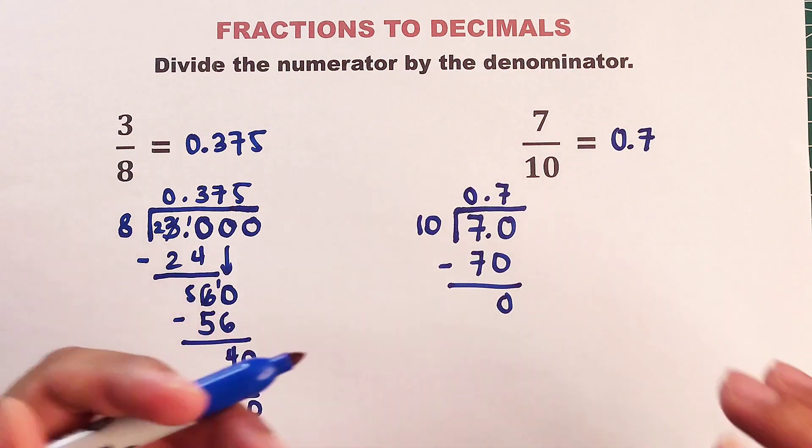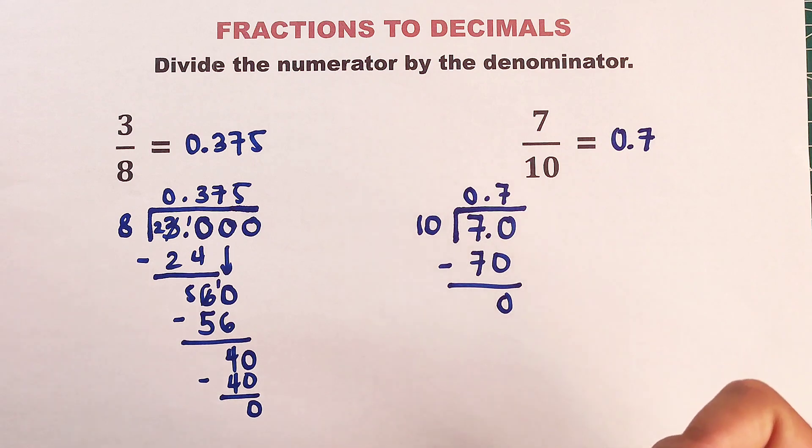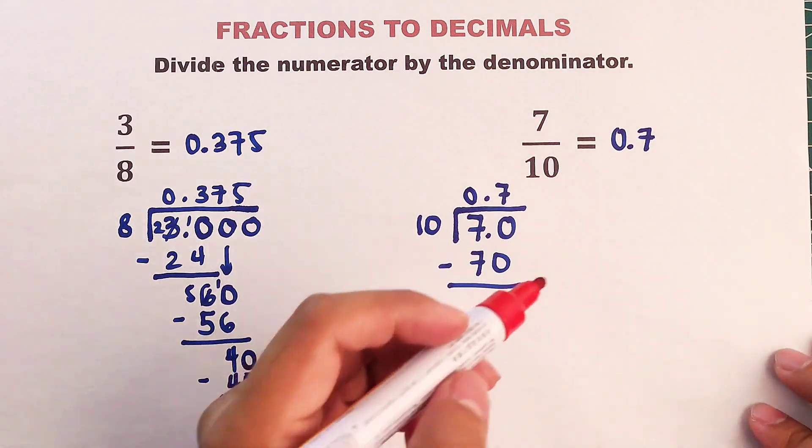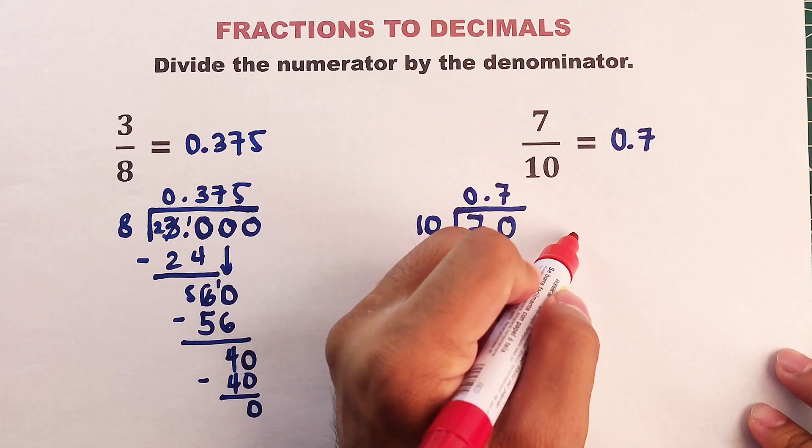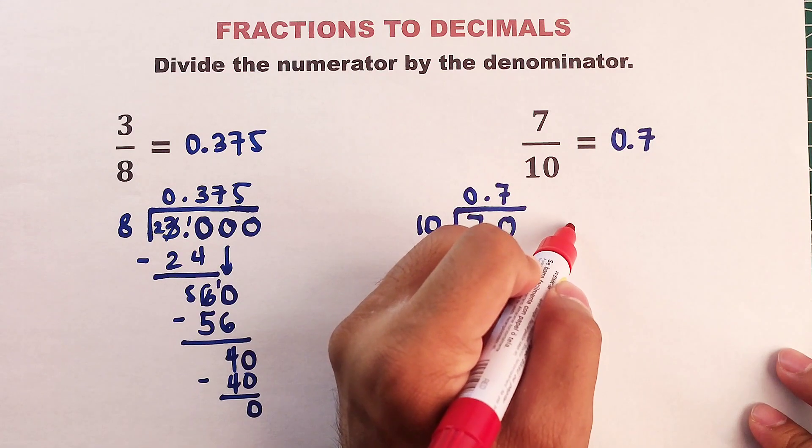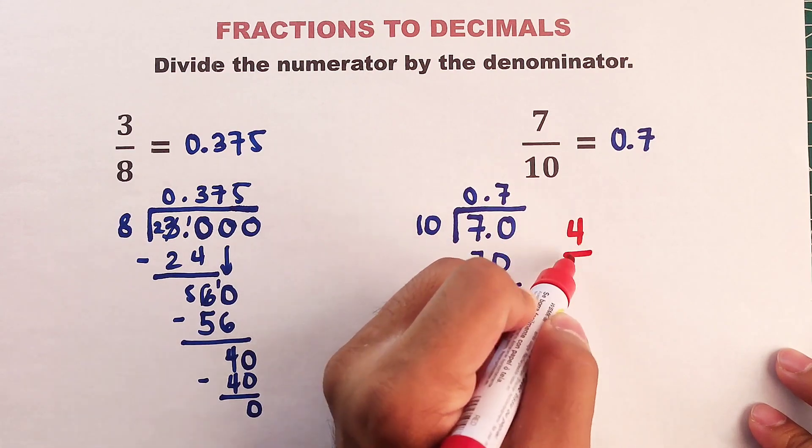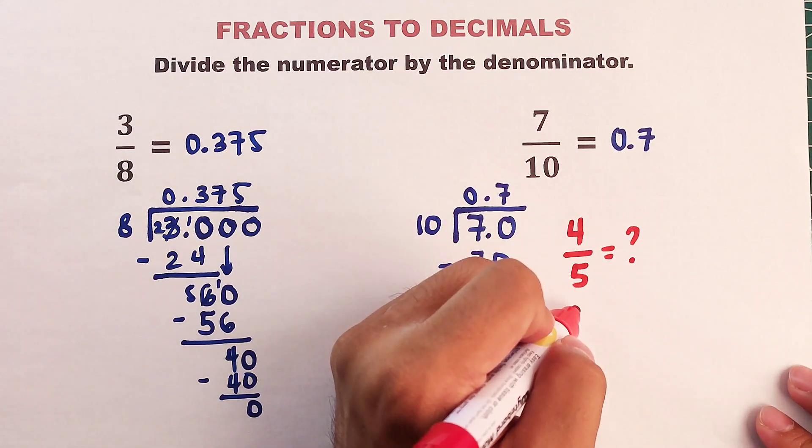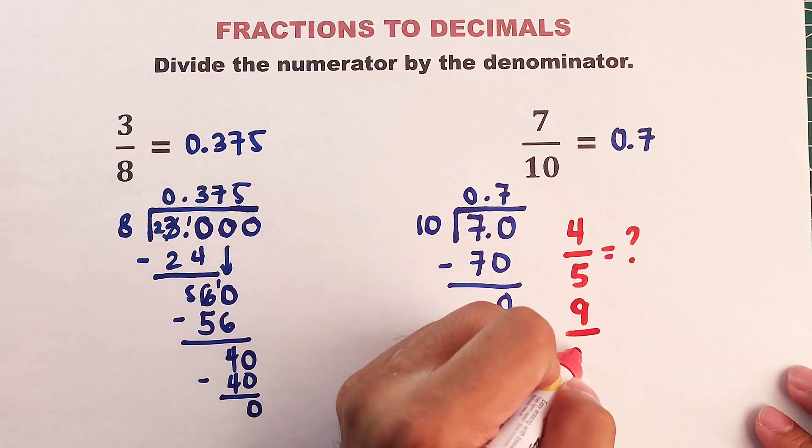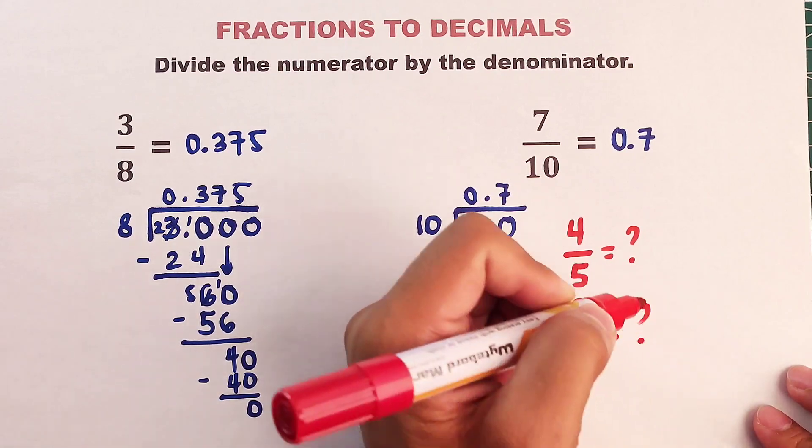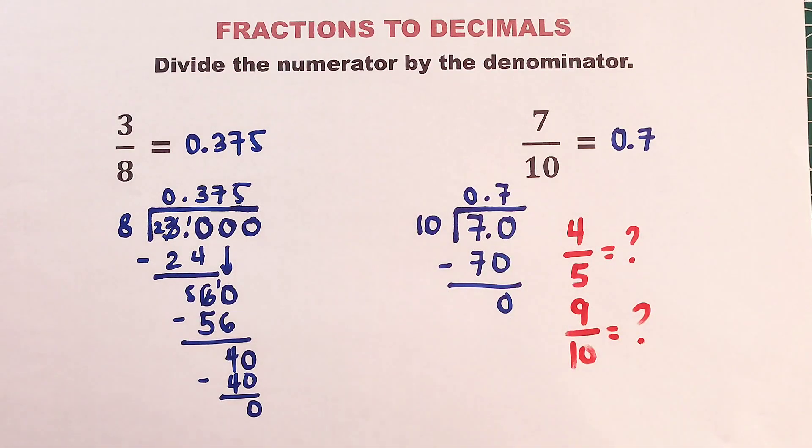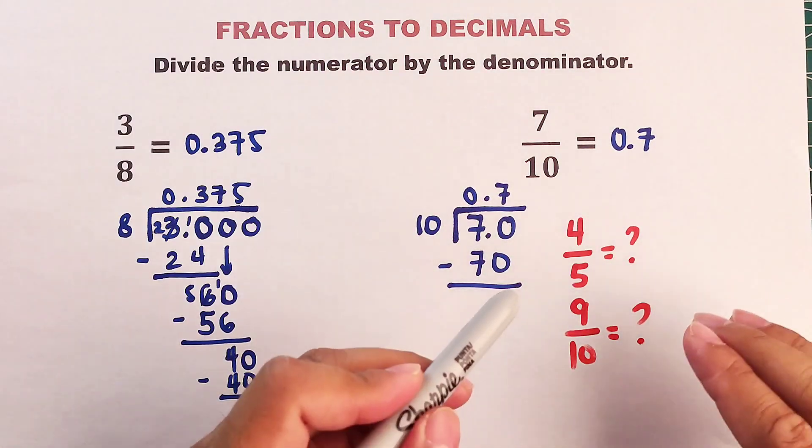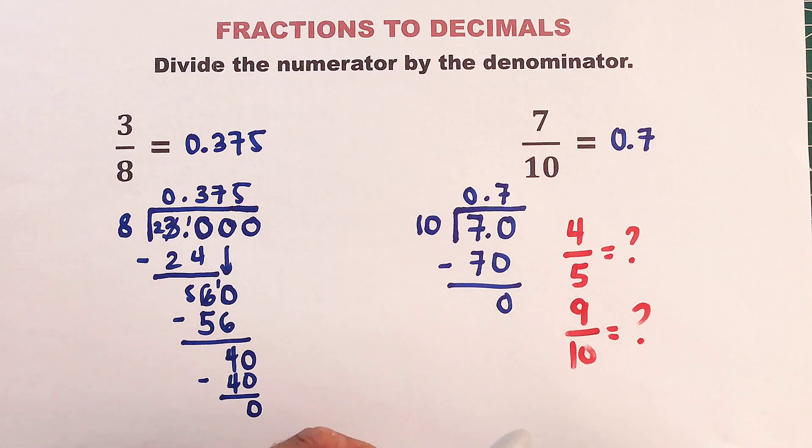So do you have any question? So as part of our routine, I will give you an example that you need to answer. We have, I will put 4 over 5 and 9 over 10. And let me know in our comment section, what is your answer for these 2 given fractions? And you need to convert this into decimal.